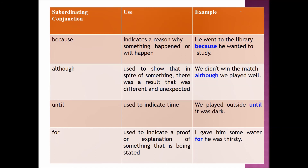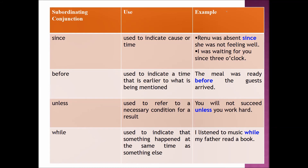UNTIL is used to indicate time. Example sentence: 'We played outside until it was dark.' FOR is used to indicate proof or explanation of something being stated. Example sentence: 'I gave him some water, for he was thirsty.' SINCE is used to indicate cause or time. Example sentences: 'Renu was absent since she was not feeling well.' 'I was waiting for you since 3 o'clock.'